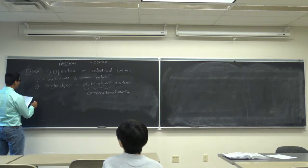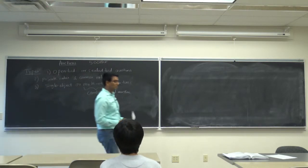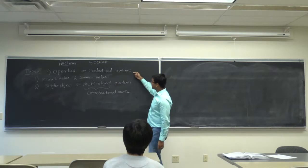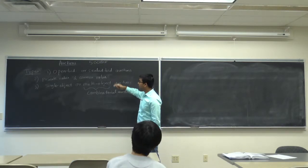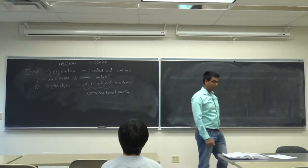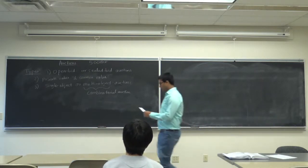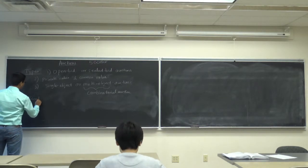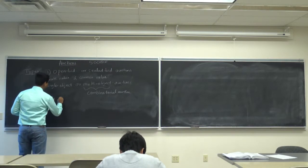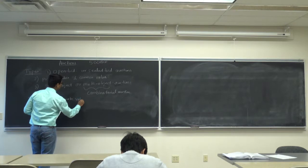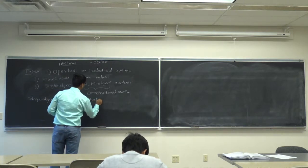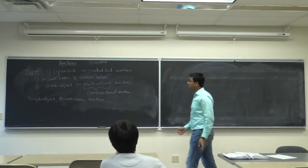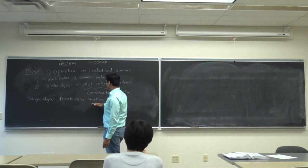Those of you who want to solve hard problems should probably concentrate on combinatorial auctions — I will be very happy to be in your thesis committee. These are the three different types of auction: the first pertains to information structure, the second to what the value of the object is, and the third to the number of objects being auctioned at the same time. In this lecture we will talk about single object private value auctions.